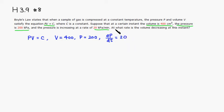Then we're looking for at what rate is the volume decreasing at this instant. So we're looking for dV/dt. This is what we're looking for.